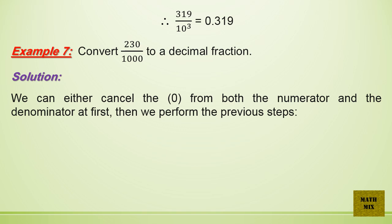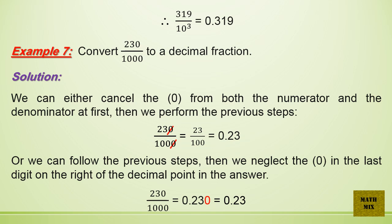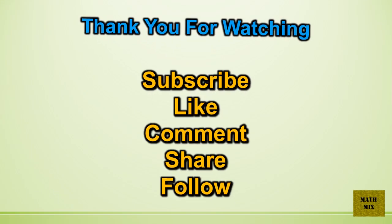Example 7: Convert 230 over 1000 to a decimal fraction. We can either cancel the 0 from both the numerator and denominator first — giving 23 over 100, which equals 0.23 — or follow the previous steps to get 0.230, then neglect the trailing zero on the right of the decimal point. Either way, 230 over 1000 equals 0.23.